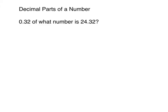Let's go to the next part of our lesson, which is decimal parts of a number. This is just like fractional parts of a number except that you're using decimals. So this says 32 hundredths of what number is. If we want to set that up into an equation we're going to say 32 hundredths of means times what number n is equals 24.